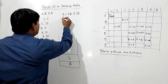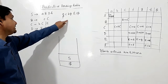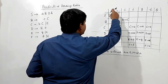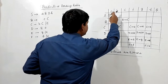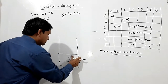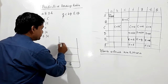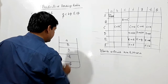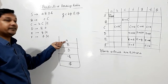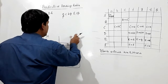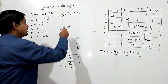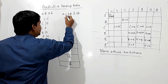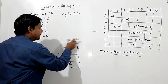We want to parse the string starting with A. We have S on the stack and A as the current input. Using cell [S, A], we replace S with ABDH. Now A is on top. A matches the current input A, so we pop A and advance the pointer.